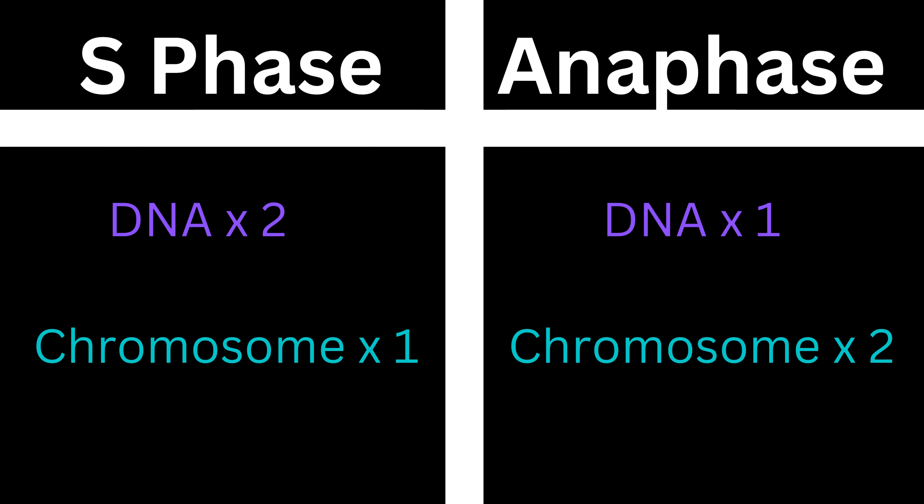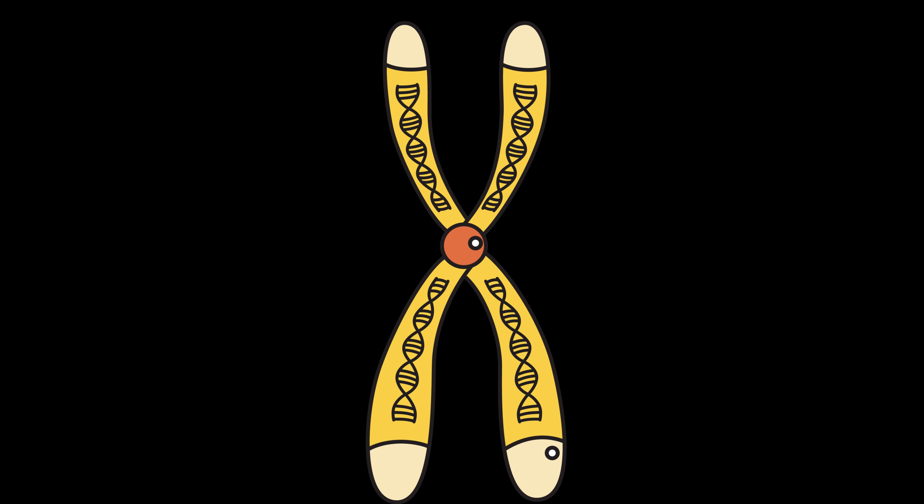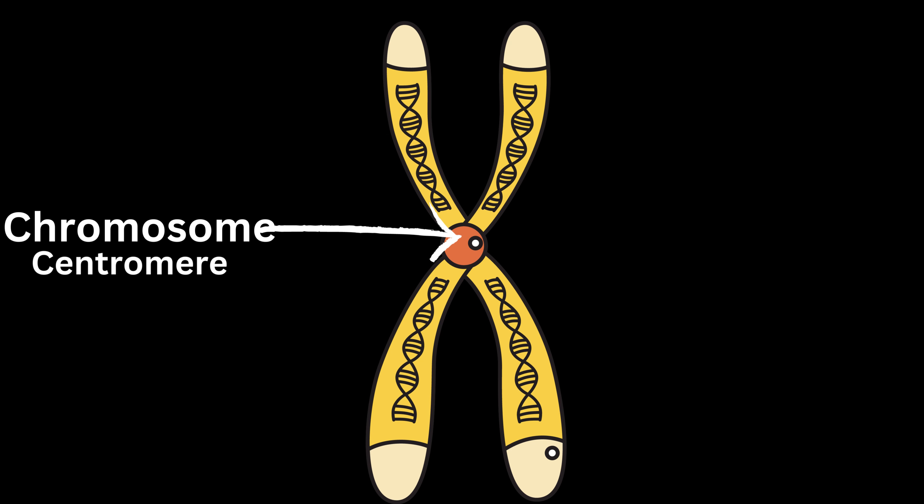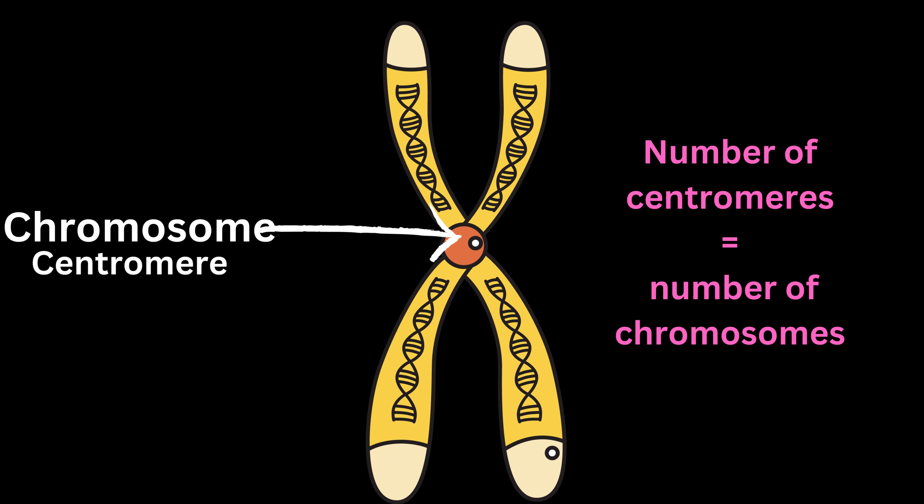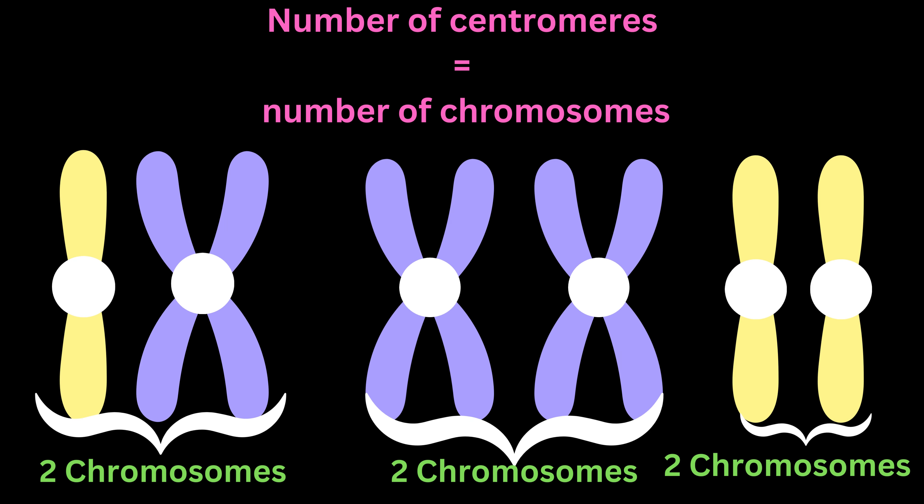In order to understand this concept, we will consider the centromere of the chromosome as the entire chromosome, because it is based on the number of centromeres that we count the number of chromosomes. So if we have two centromeres, it refers to having two chromosomes.